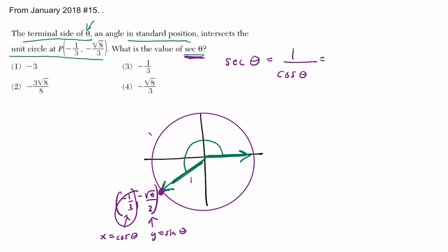And that's just 1 over negative one-third, which is the same as 1 times negative 3 over 1, or negative 3. And that's the secant. All right, I hope this helped.